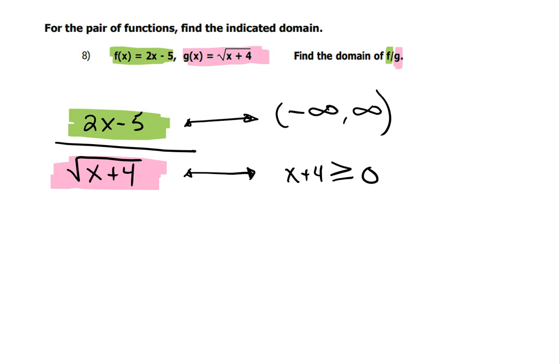However, because this square root sign is also in the denominator, you cannot, it cannot be equal to, so I have to take that out, which means that x has to be greater than a negative 4.